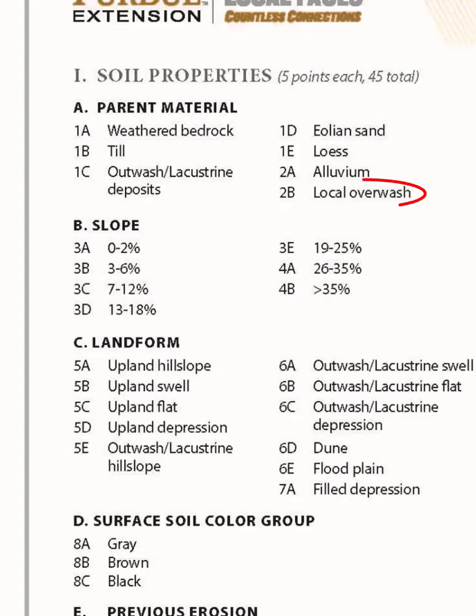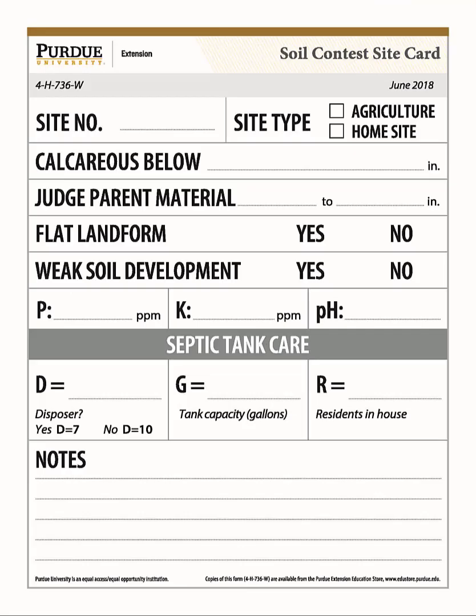Parent Material 2B, Local Overwash. It will need to be greater than 20 inches thick, it buries a darker horizon, it is not on a flood plain, and the site card will be marked that the diagnostic zone is weakly developed — and that will be circled yes.